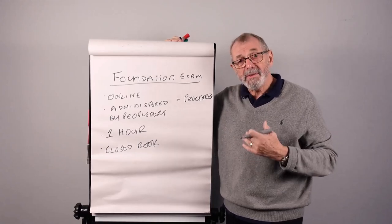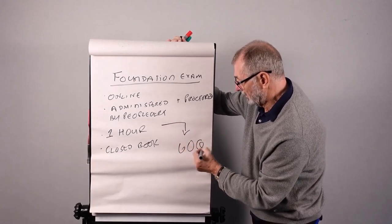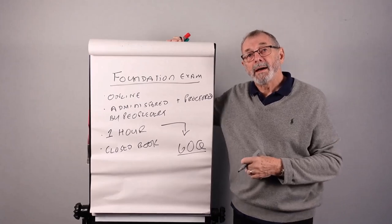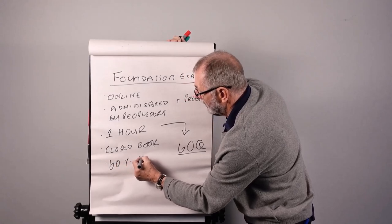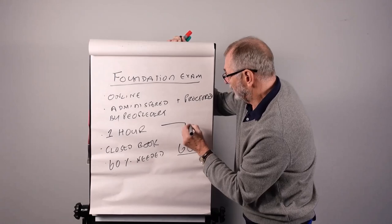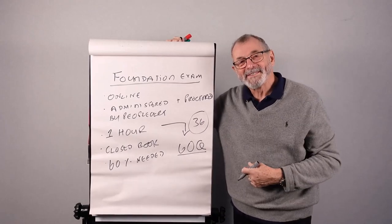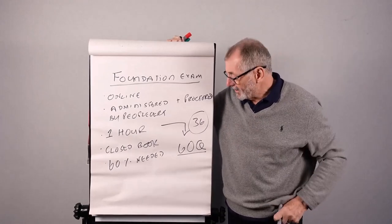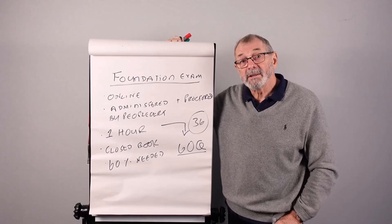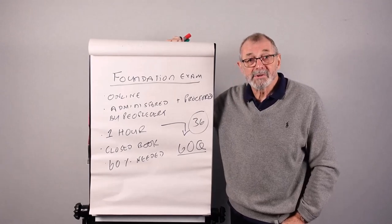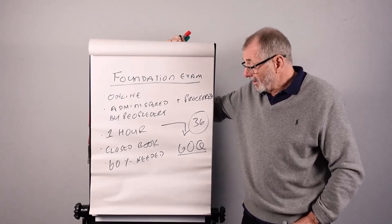You aren't allowed to use any reference material because it's essentially a fundamental qualification. Now in that one hour you will be confronted by 60 questions, and the pass mark is 60 percent. So what you need to get is 36 out of the 60. So 36 is as good as 60; 35 is as disappointing as zero, I'm afraid. And one of the benefits of doing online examinations is that you get your results pretty much immediately once you submit your answers.